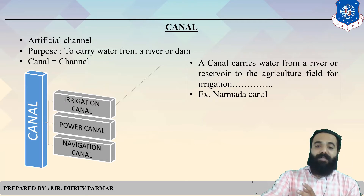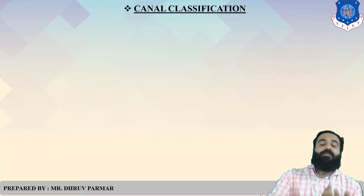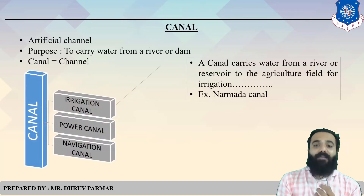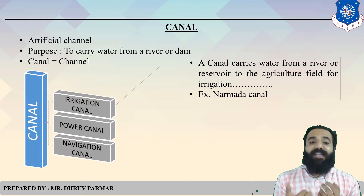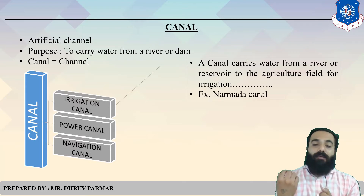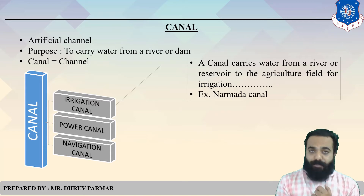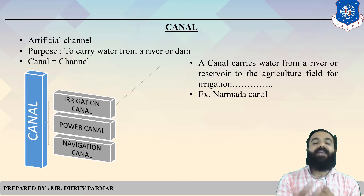The second type is Power Canal. A Power Canal is a canal used to generate power. The third type is Navigation Canal — a canal used for navigation or transportation purposes.